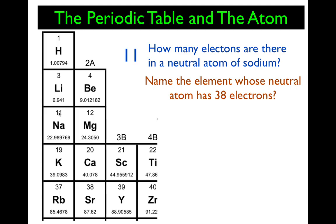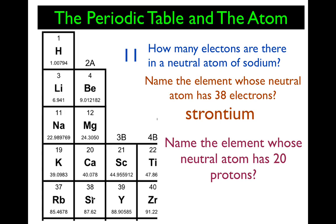Now, name an element whose neutral atom has 38 electrons. If it's neutral, then it must also have 38 protons. We look for atomic number 38 and we have strontium. Next, name the element whose neutral atom has 20 protons. You don't really need to know that it's neutral — if it has 20 protons, it has to be calcium. Those are the types of questions: number of electrons, number of protons, or identifying the element based on those numbers.